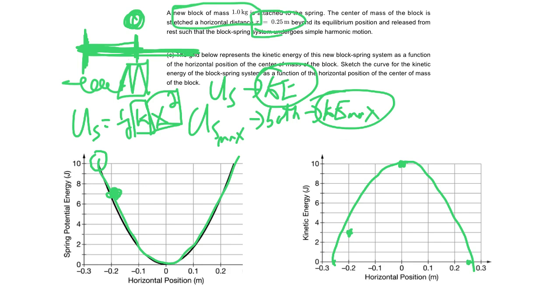But you know, you could just look at some of the points at negative 2. Since this is 7, they should add up to 10. That means that should be 0.3 for kinetic. If we look at 0.1, 0.1 looks like it's about a little bit less than 2. So that means this should be a little bit more than 8. Hey, it looks like that one's drawn in pretty well.